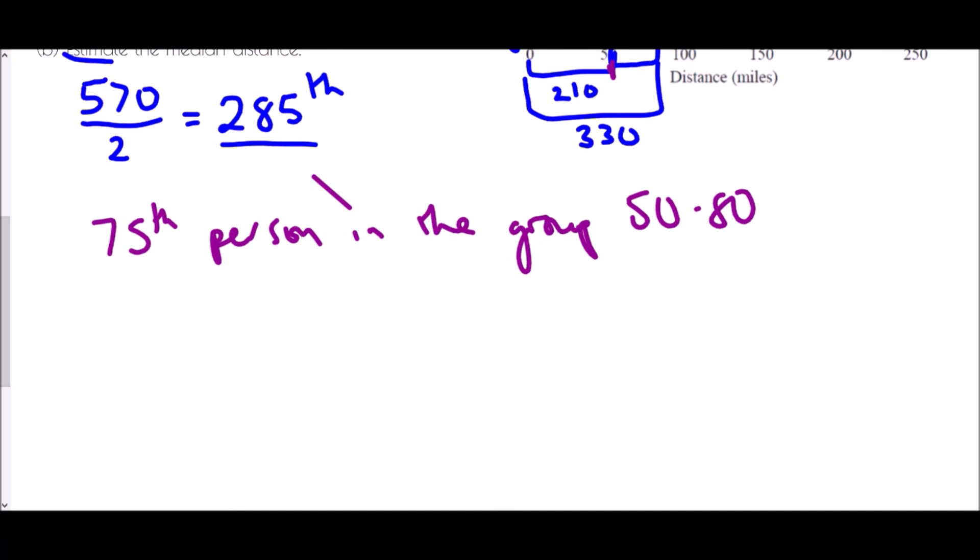And there were 120 people in that group. So in order to make an estimate of where the median actually is we need to make a fraction. It's 75 out of 120 people and then I'm going to multiply that by the group width.